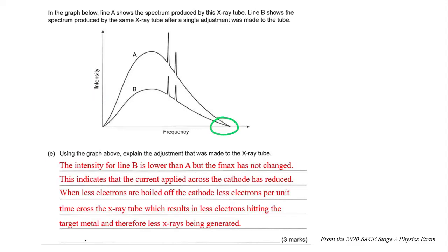This indicates that the current applied across the cathode has reduced. When less electrons are boiled off the cathode, less electrons per unit time cross the X-ray tube, which results in less electrons hitting the target metal and therefore less X-rays being generated.